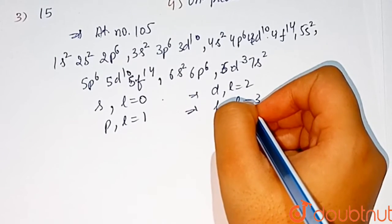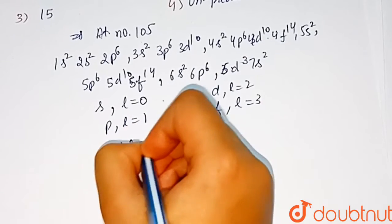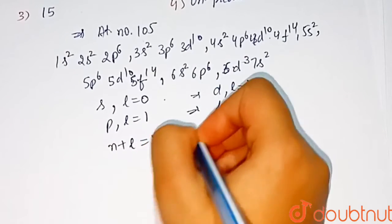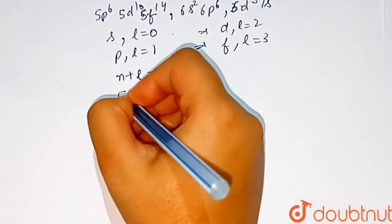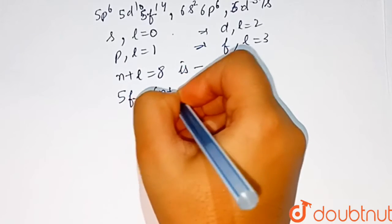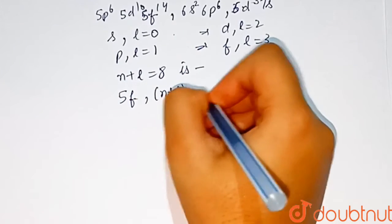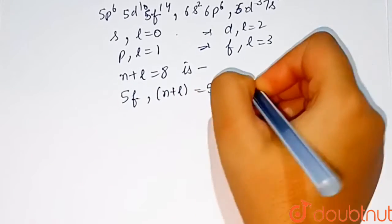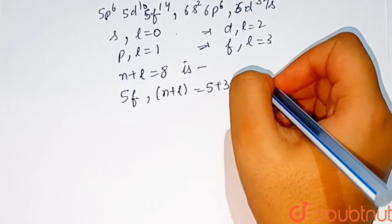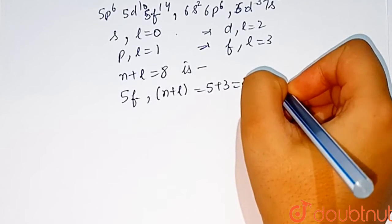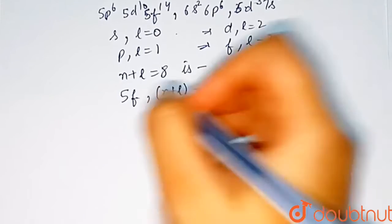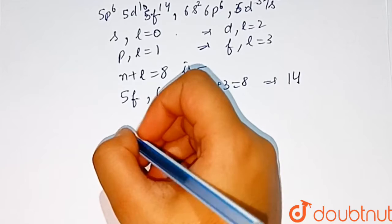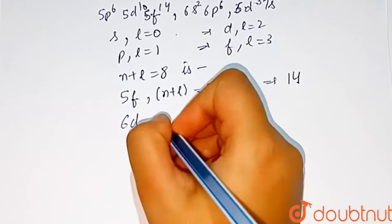In this configuration, with n plus l equal to 8 is 5f. n plus l equal to 5 plus 3 which is equal to 8. Number of electrons present in 5f is 14. And 6d: n plus l equal to 6 plus 2